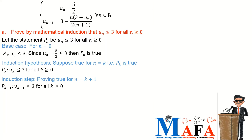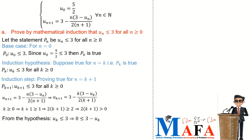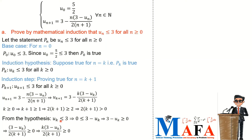We begin with u_{k+1}. From the original recurrence, replace n with k to get u_{k+1}. We know k is greater than or equal to 0, so k+1 is greater than or equal to 1, meaning 2(k+1) is greater than or equal to 2 — so the denominator is positive. From our induction hypothesis, u_k is less than or equal to 3, so subtracting u_k from both sides gives 0 is less than or equal to 3 minus u_k. Therefore (3 minus u_k) divided by 2(k+1) is greater than or equal to 0, since we are dividing a non-negative number by a positive number.